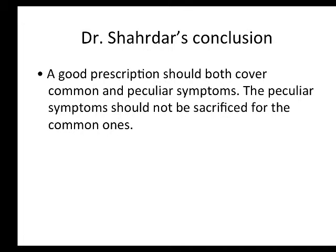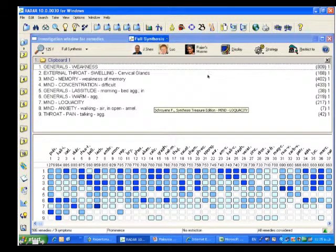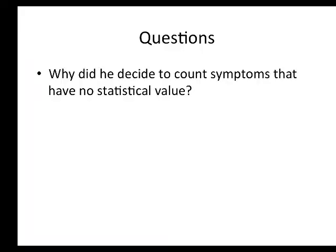Dr. Shadar's conclusion: a good prescription should cover both common and peculiar symptoms. The peculiar symptoms should not be sacrificed for the common ones. Visually, the common symptoms differ from the less common ones by number of remedies. Will Taylor says a rubric containing more than 160 remedies should not affect the statistical analysis — so most of these rubrics will not affect the statistical analysis. So you have to ask: why does Dr. Shadar use such common symptoms?